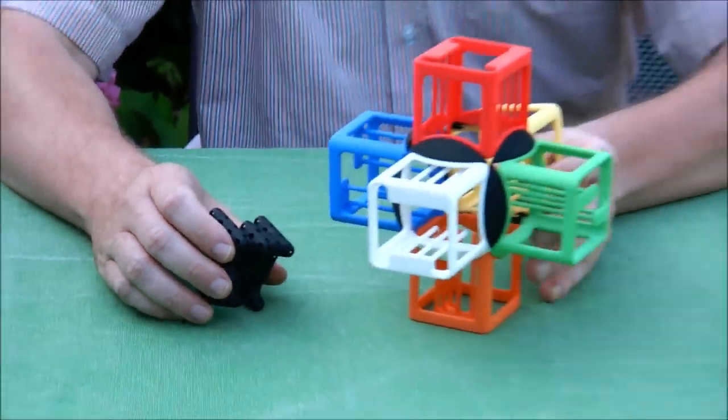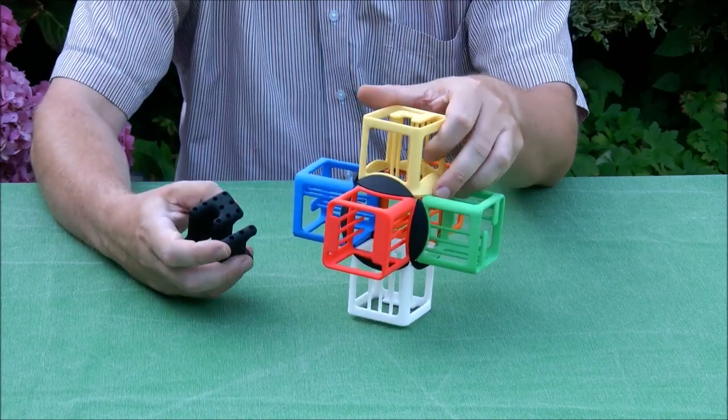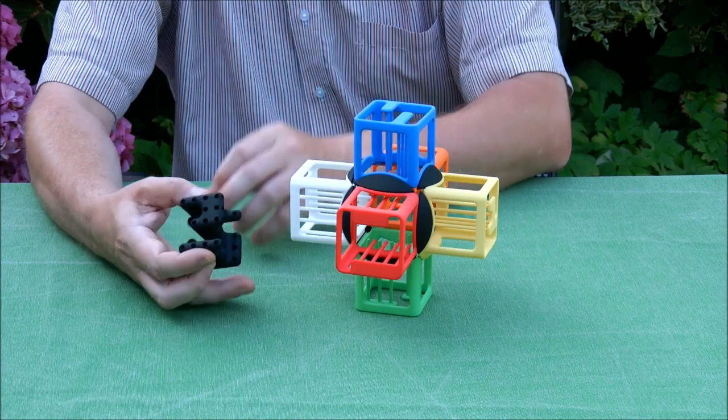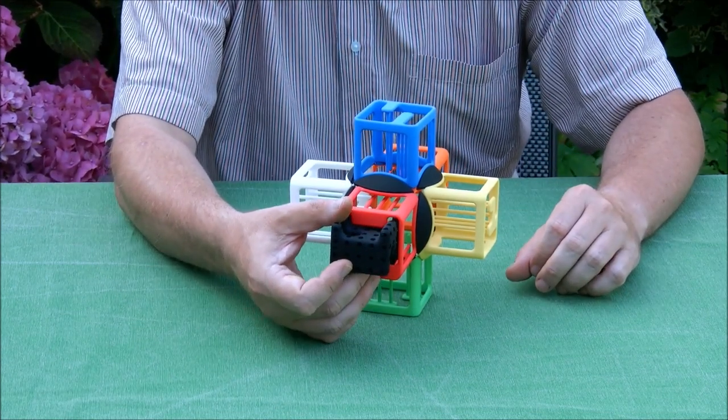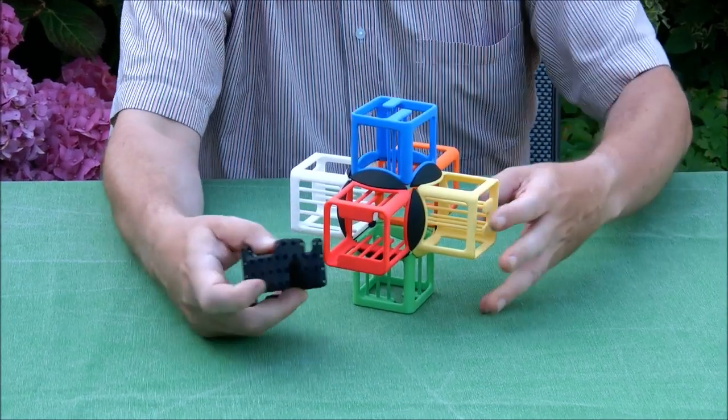So what we have here is a cage and we see the number four here. So we're looking for the number four. This is the way that it goes in and it can't go in any other way because it doesn't fit.